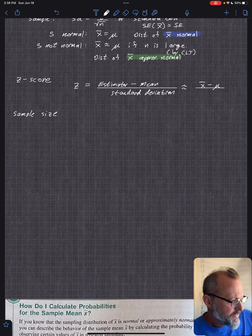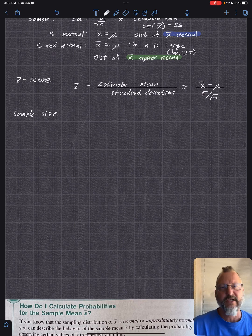Then it's divided by sigma over the square root of n. So that's how we'll do the calculation.